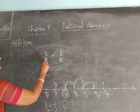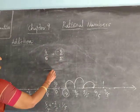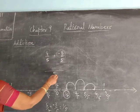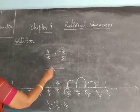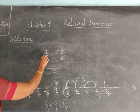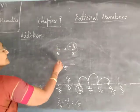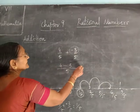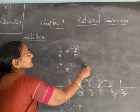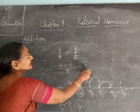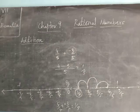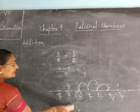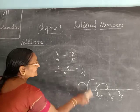Another way: take the common denominator, which is 5. Then divide LCM by denominator — that gives 1. 1 into 4 is 4. Plus minus, then 1 into 3 is 3. 4 minus 3 is equal to 1. So the answer is 1 by 5. You can add rational numbers on the number line or by the algebraic method — two types.